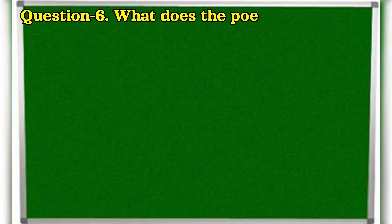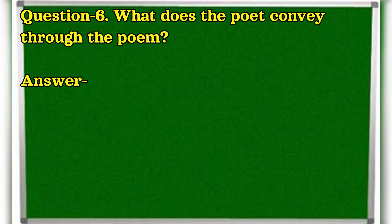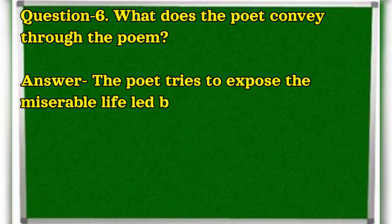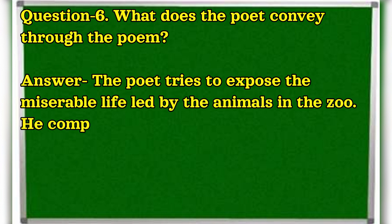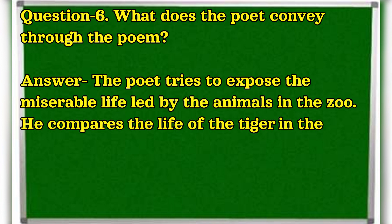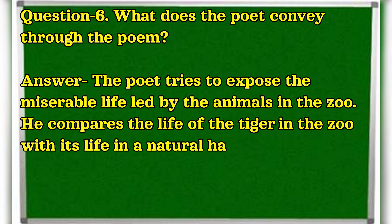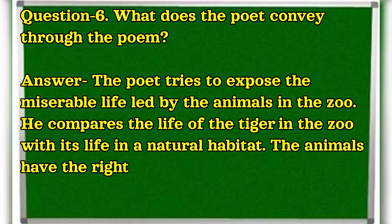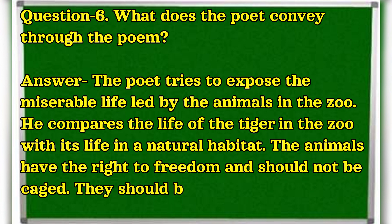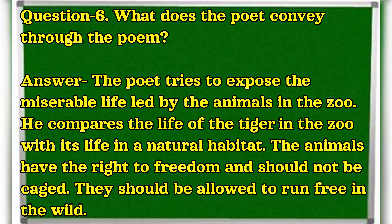Question 6. What does the poet convey through the poem? Answer. The poet tries to expose the miserable life led by the animals in the zoo. He compares the life of the tiger in the zoo with its life in a natural habitat. The animals have the right to freedom and should not be caged. They should be allowed to run free in the wild.